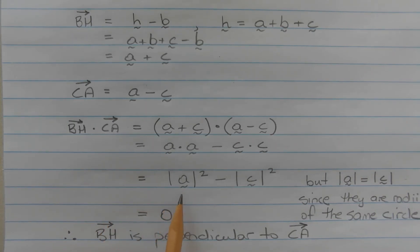And that equals the magnitude of vector A squared minus the magnitude of vector C squared. But the magnitude of vector A is equal to the magnitude of vector C since they are radii of the same circle.